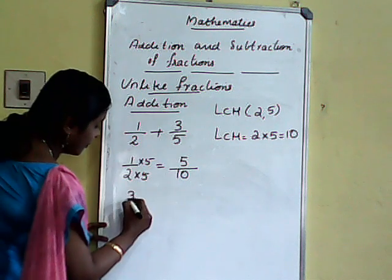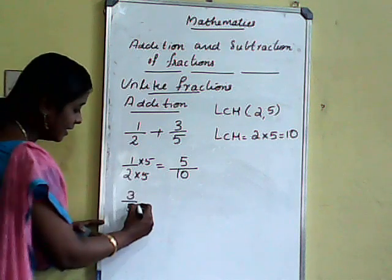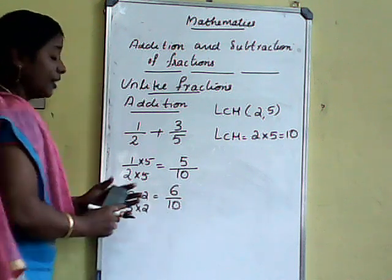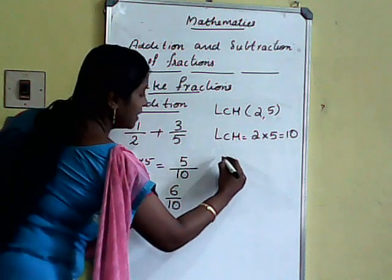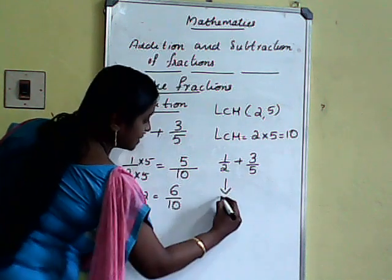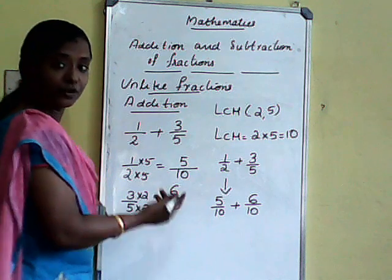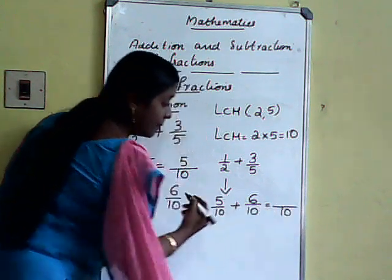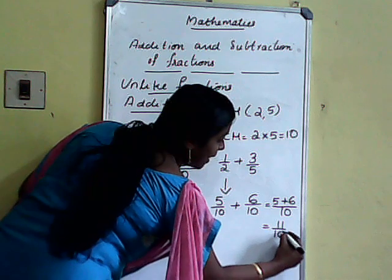For 3 by 5, we want to convert the denominator to 10. Which number must be multiplied? 2. So 3 by 5 into 2 over 2 gives 6 by 10. Now it is like fractions because the denominator is the same. So 1 by 2 plus 3 by 5 converts to 5 by 10 plus 6 by 10. Now we put the denominator the same and add only the numerators: 5 plus 6 gives 11 by 10.